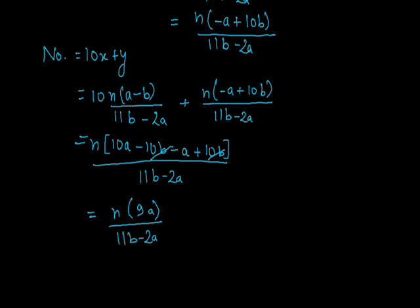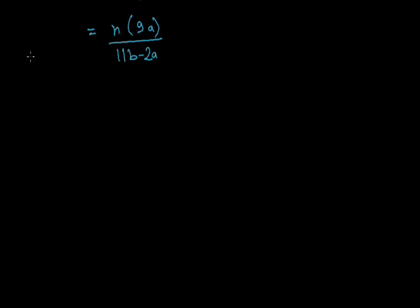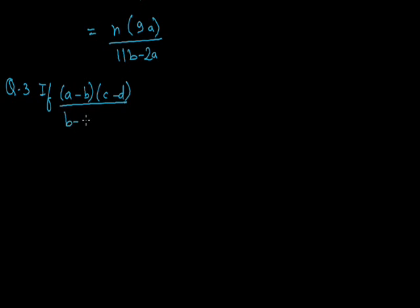Now we come to question number 3. If (a minus b)(c minus d) upon (b minus c)(d minus a) is equal to 2012 upon 2013, we have to find the value of the given expression.